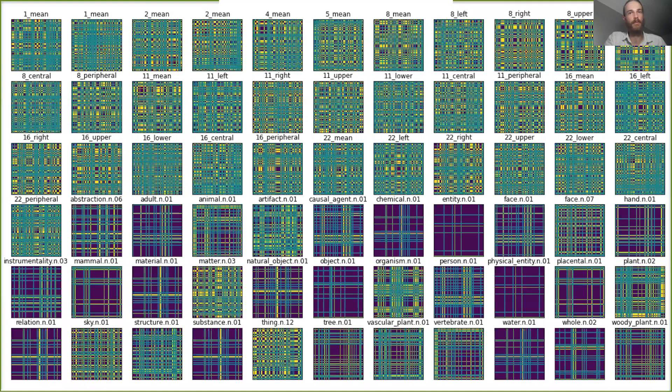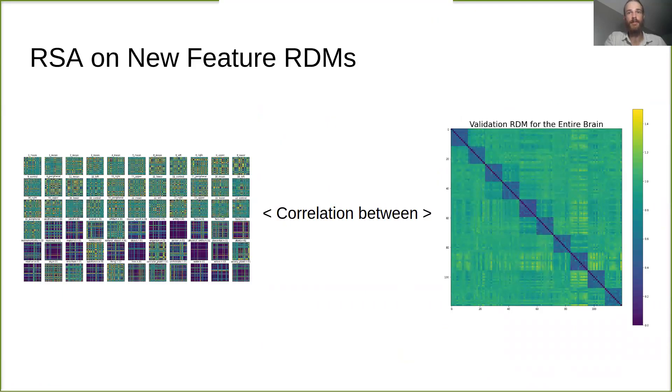We also computed RDMs for each of the 66 new Gabor and semantic features. We computed the correlations between each feature RDM and the RDM for the entire brain, resulting in a quantitative metric of the extent to which each of these new features was represented in the brain.